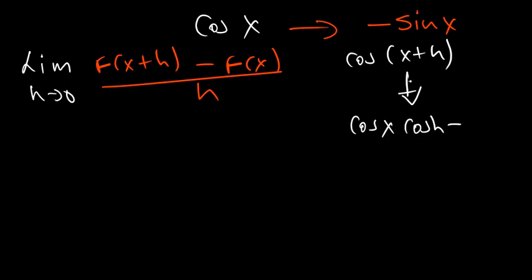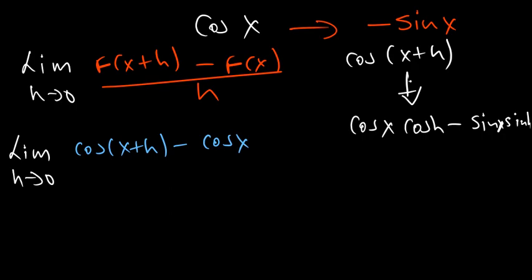We'll just go on and substitute the limit as h approaches 0, and then cosine of x plus h minus the cosine of x over h. And then on the next step, that's where we are just going to substitute that sum angle expansion equation.